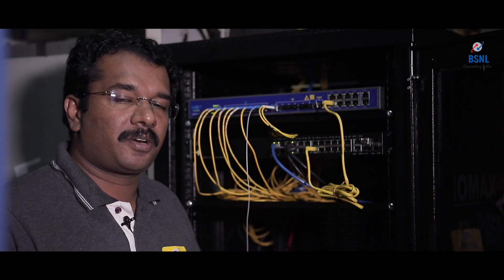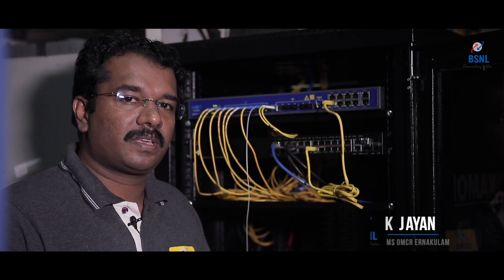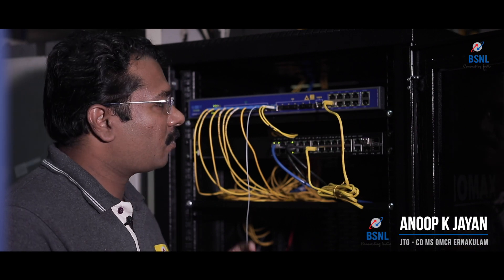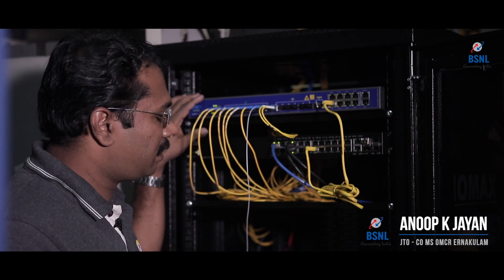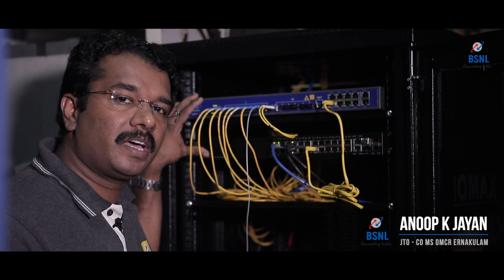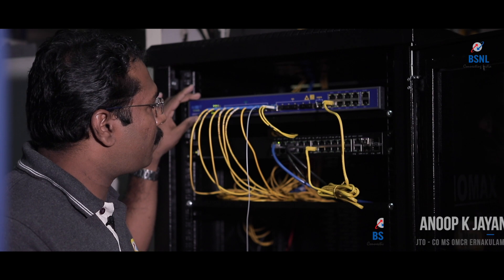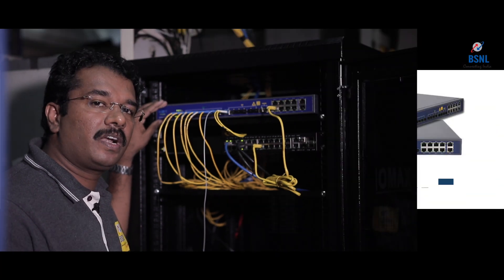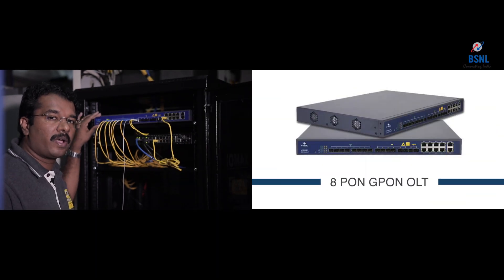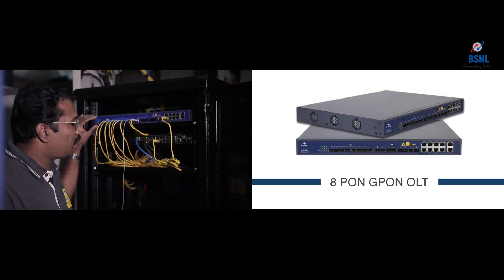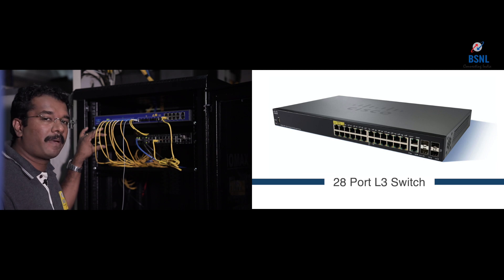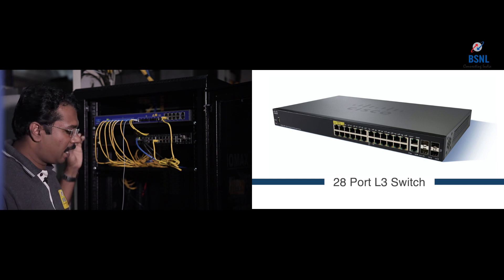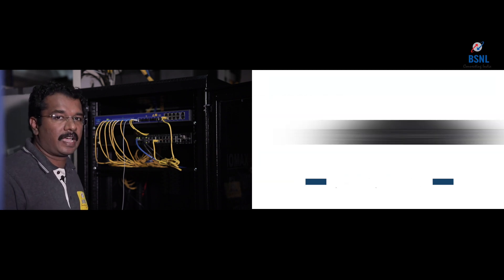This is the basic triple play service GPON equipment rack. In this equipment rack, mainly three elements are there. The first element is one GPON OLT, the next is one L3 manageable switch, and one cache server.